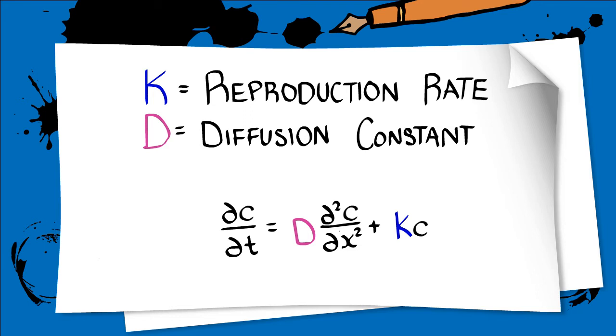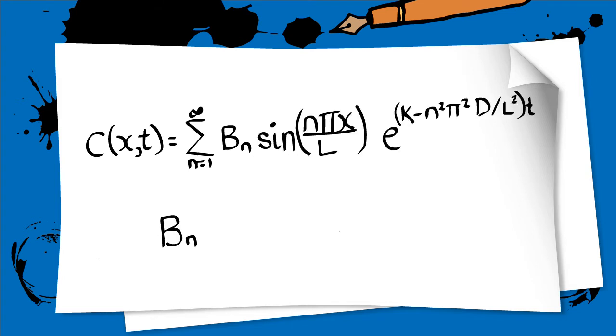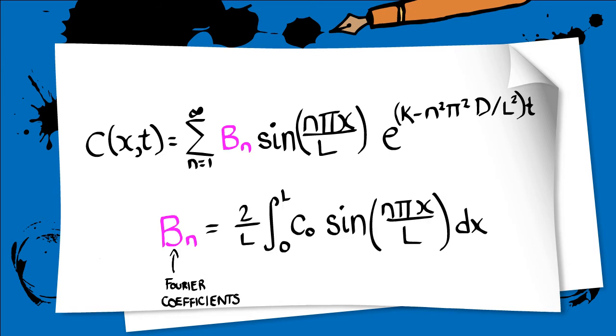We find the solution through separation of variables, and using Fourier series, we can express c as an infinite sum where each term is the product of a function of space and a function of time, and where b sub n are the Fourier sine coefficients and n are the Fourier modes.